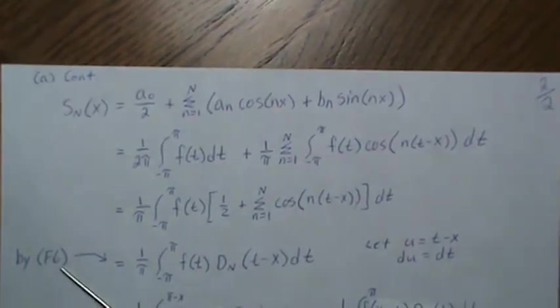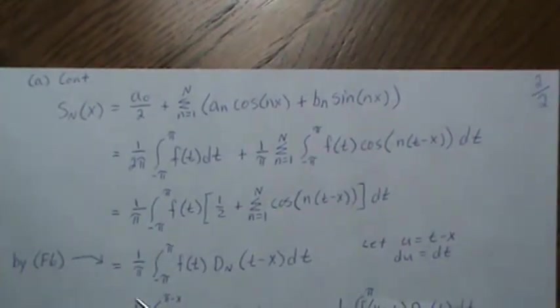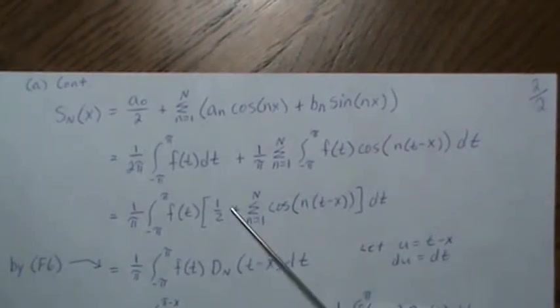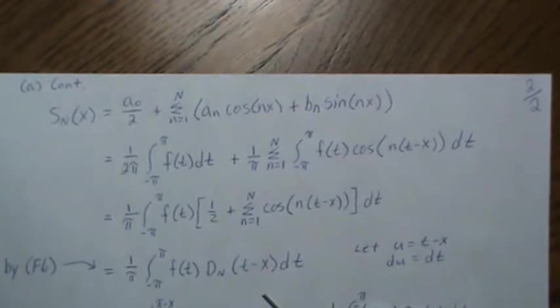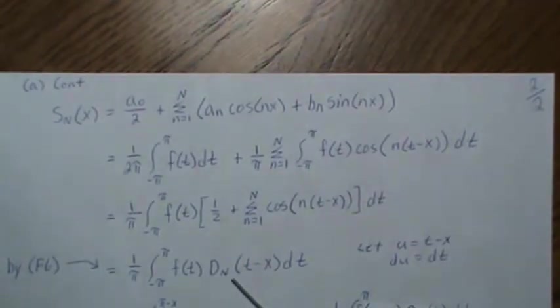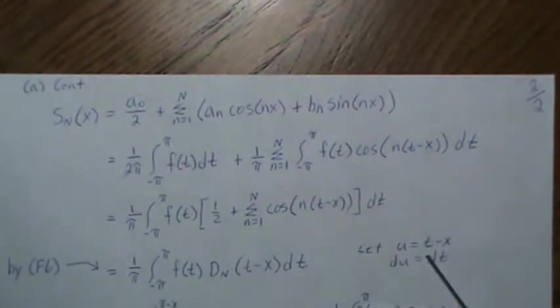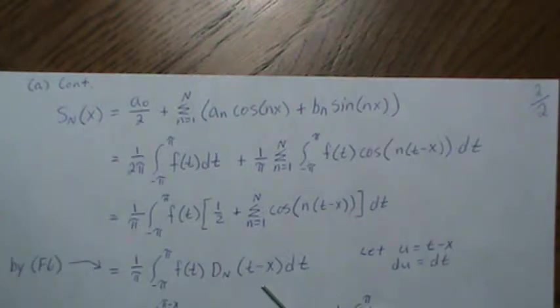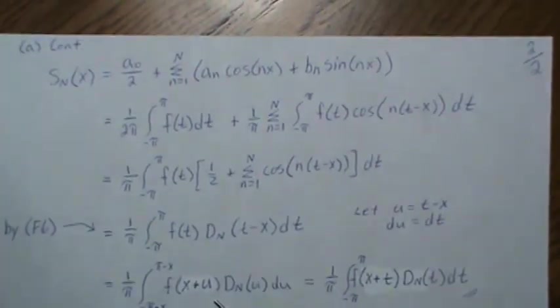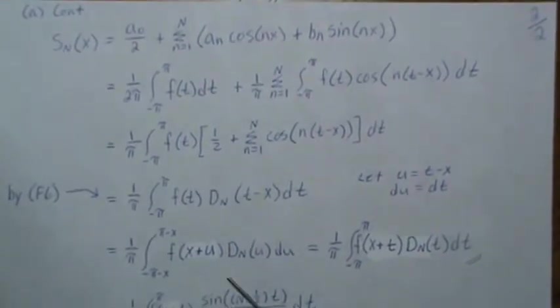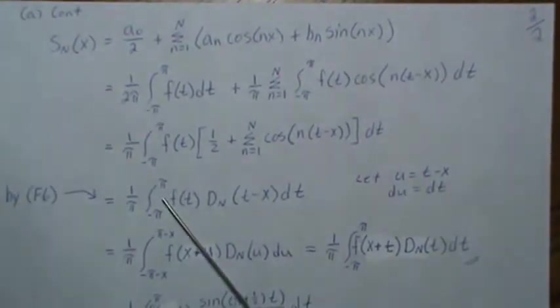So we can just instantly write this as this. Now if we do a u-substitution, u equals t minus x...